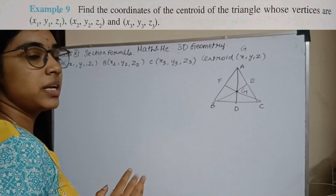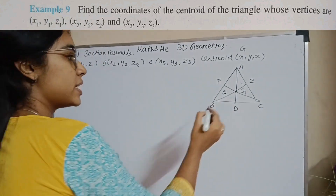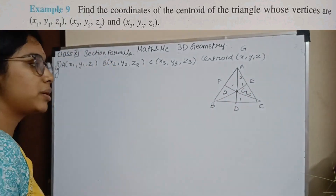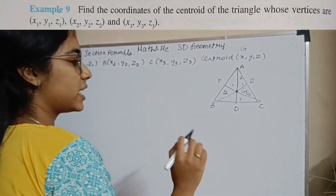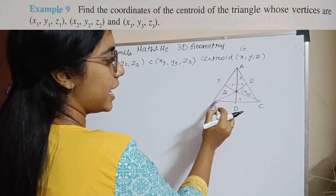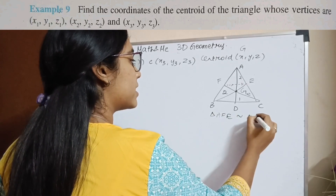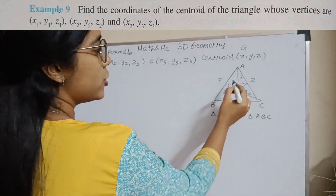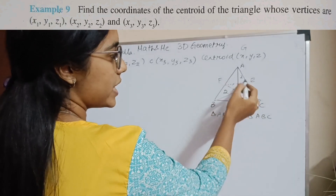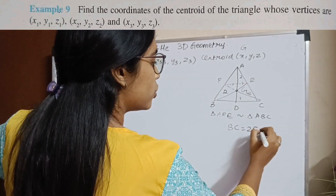The centroid divides the median in the ratio 2 is to 1. To prove it — when I join the line EF, I have two triangles: triangle AFE and triangle ABC. Triangle AFE is similar to triangle ABC. From this similarity, AF equals half of AB, meaning AB is twice AF, AC is twice AE, and therefore BC is twice EF. So BC equals 2 times EF.